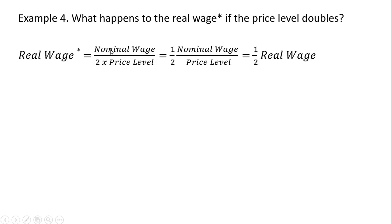Example 4: What happens to the real wage if the price level doubles? The new real wage will be the nominal wage divided by 2 times the price level, which we could just rewrite as one-half the nominal wage divided by the price level. Notice that the nominal wage divided by the price level is the real wage, so our new real wage is just one-half our old real wage.